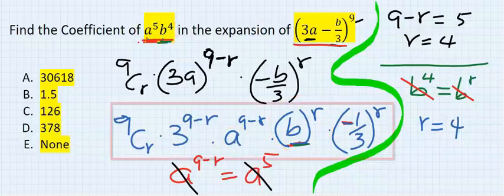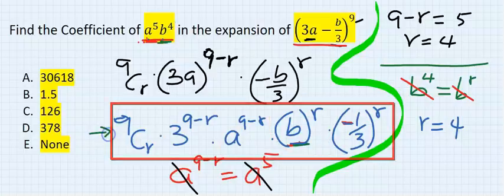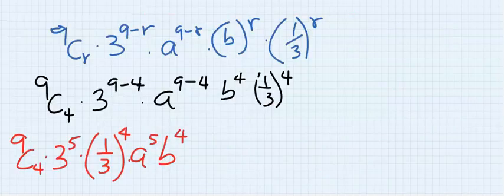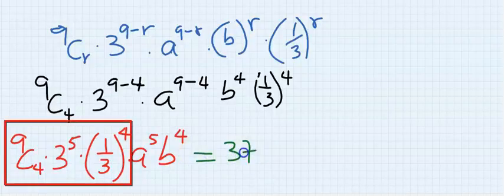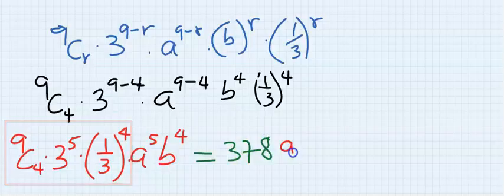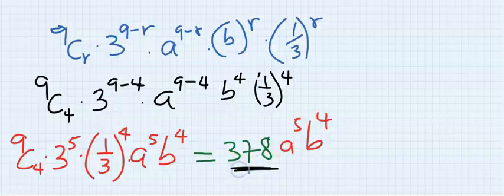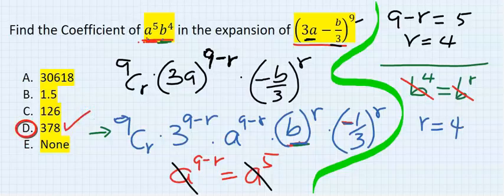So I'm going to substitute the value of my r here. Substituting for r and solving this, you're going to get 378, a to the power of 5, b to the power of 4. The coefficient is what is in front of it. Our answer is D.